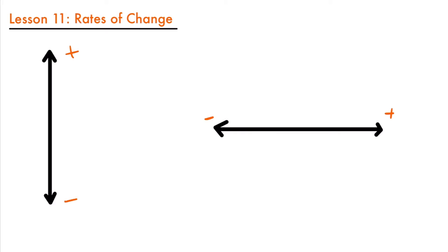One way to think about this: if you were on a building and you dropped a rock and it fell down, it would be losing height. That rock would not be as high up from the ground as it started. So as it falls down, it has a smaller and smaller height, and that is why we call the down direction negative.